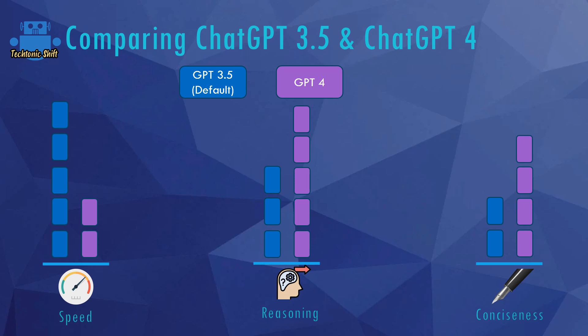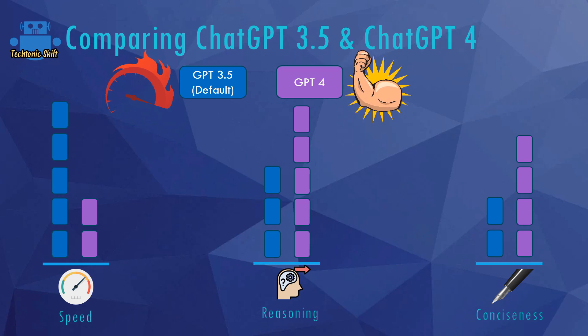To summarize: 3.5 is the faster model but 4 is the more powerful model. So for simple tasks and simple questions you can use 3.5, but for more complex tasks you should go with version 4. Let's see a practical example now.